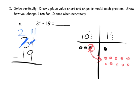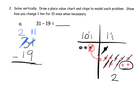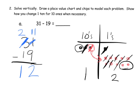Now we can subtract. In our 1s column, take away 9 from 11. We cross off 9, leaving us with 2 left over — so we record 2. Then in the tens column, take away 1 ten from 2. We take away 1 ten, leaving us with just 1 ten left over. So the answer is 12.